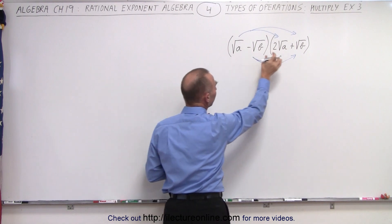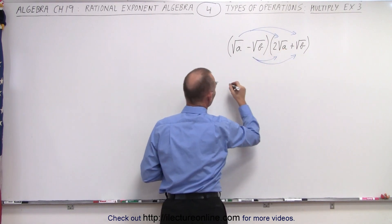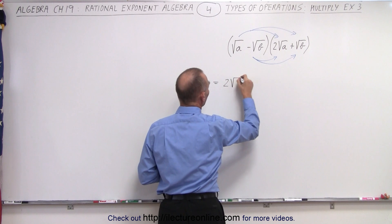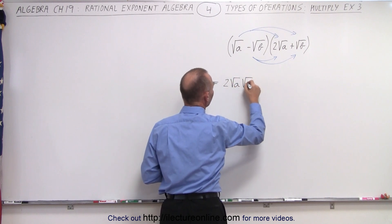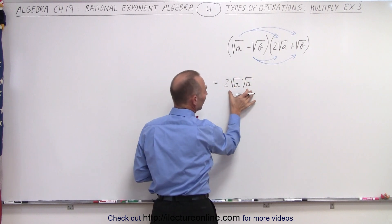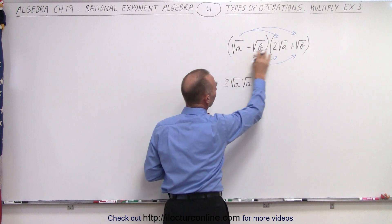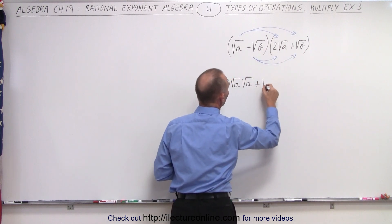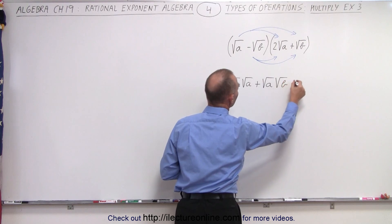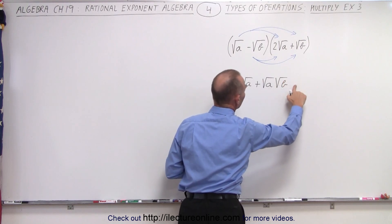We have the square root of a times twice the square root of a. So that would be two times the square root of a times the square root of a. Before we simplify it we just write that out. We get plus the square root of a times the square root of b, and then it's not going to be